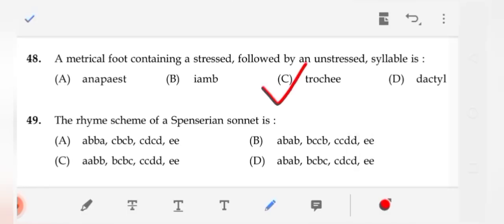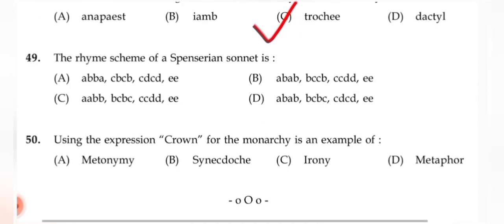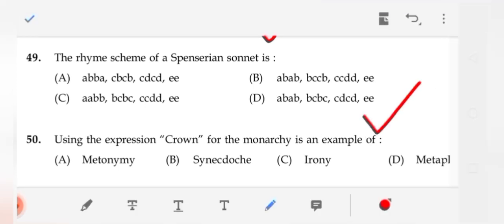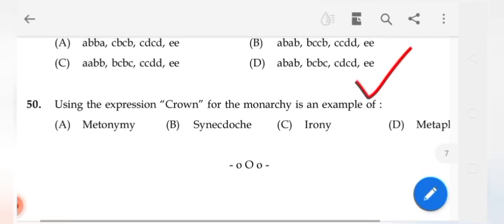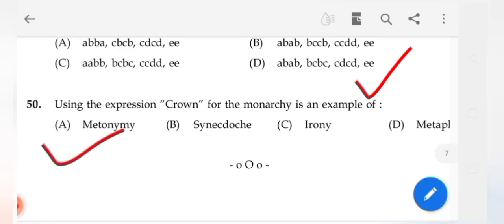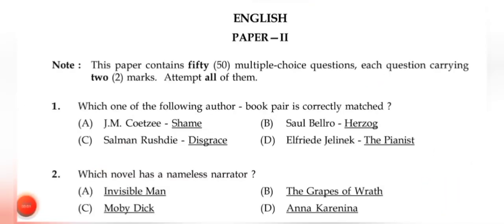Question 49: The rhyme scheme of the Spenserian sonnet is (D) ABAB BCBC CDCD EE. Question 50: Using the expression 'crown' for the monarchy is an example of metonymy — a concept worth studying if you don't already know it. Thank you so much.